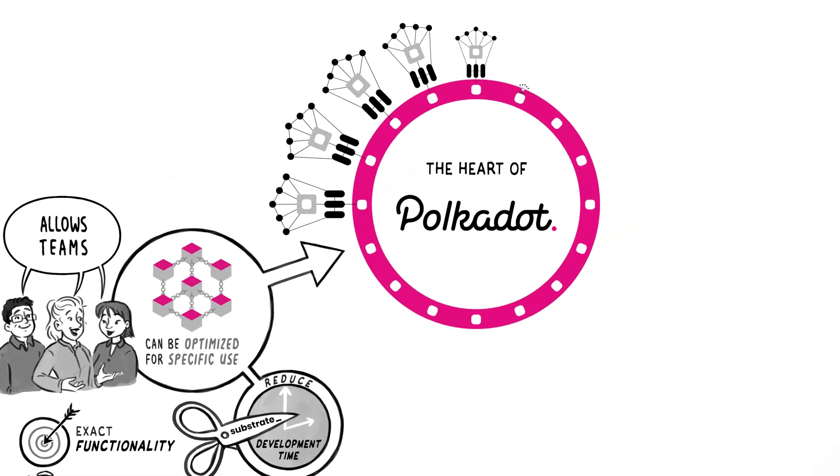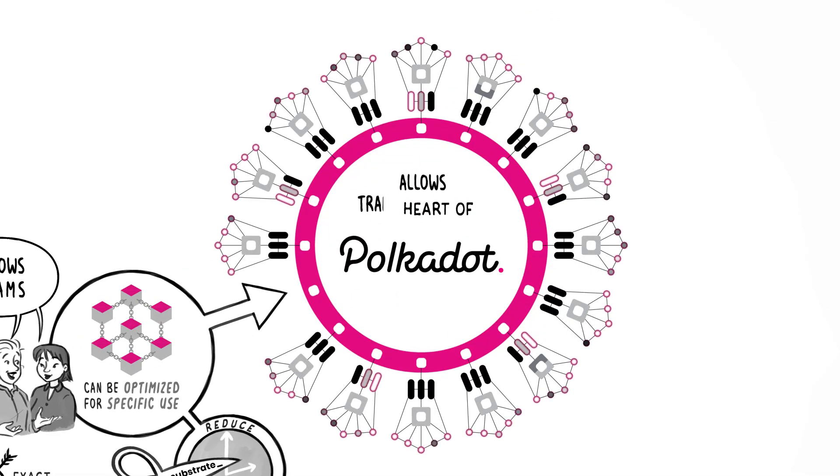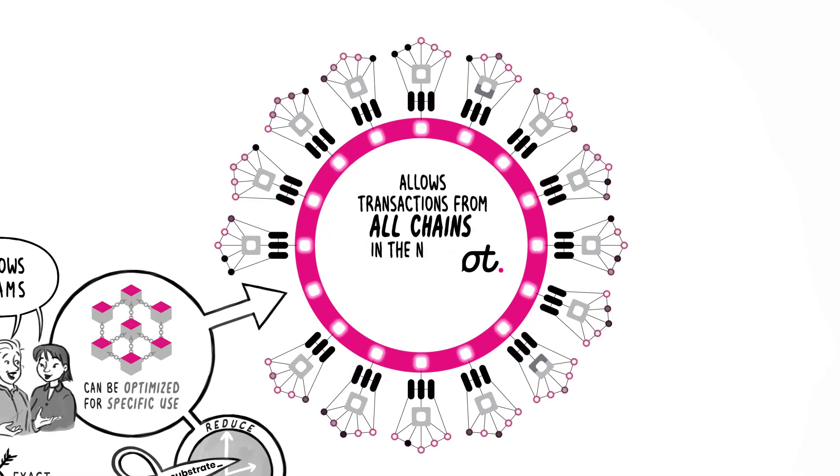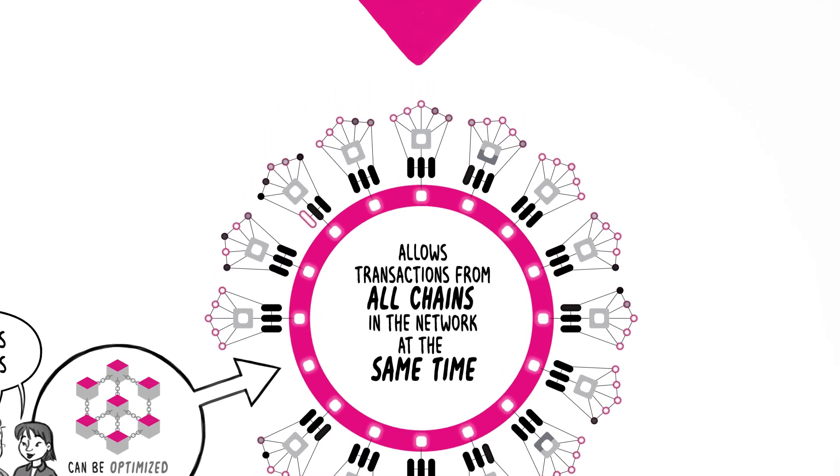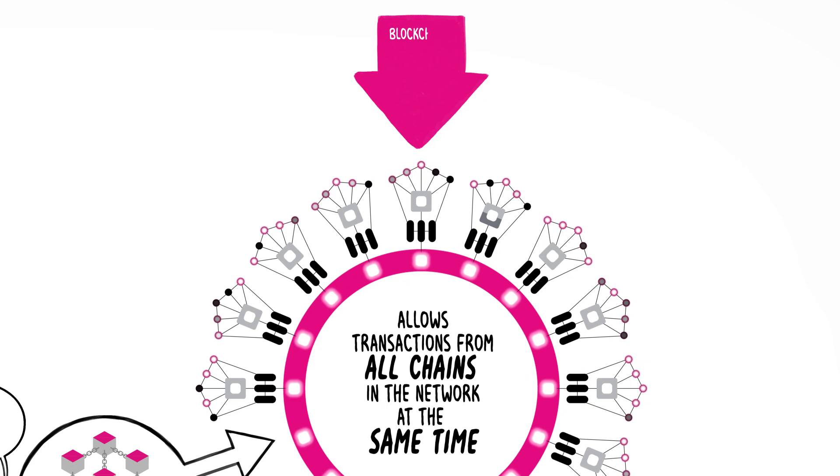The relay chain allows Polkadot to process transactions from all chains in the network at the same time, drastically increasing scalability. This simultaneous transaction processing, also called parallel processing, is why blockchains on Polkadot are called parachains.